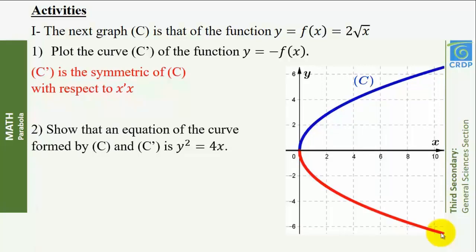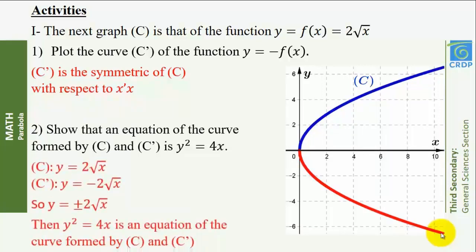The equation of curve C is y = √x and that of C prime is y = −√x. So y = ±√x. Squaring both sides of this equation, we get y² = 4x. This is an equation of the curve formed by C and C prime.